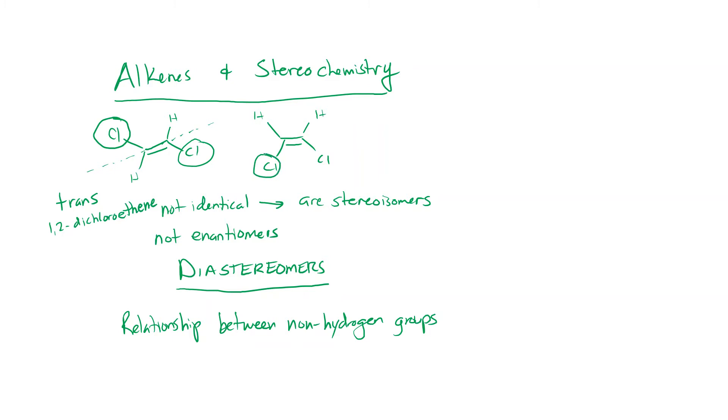On this structure over here, if we draw a line through the double bond, the chlorines are on the same side of that line. So in this case, this would be cis-1,2-dichloroethene. Notice that the whole name is the same because we have a two-carbon parent chain, we have an alkene in there, so this is ethene, and then we have two chlorines attached to carbons 1 and 2. So 1,2-dichloroethene is the same in both. What differentiates them is the stereoisomer, how we name it.